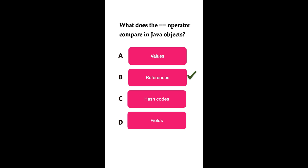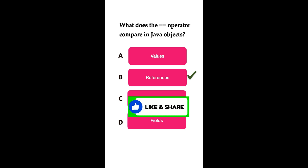In Java, the == operator compares the memory addresses or references of two objects, not their contents. If two object references point to the same memory location, == returns true; otherwise it returns false. To compare the actual content of two objects, you should use the equals() method.